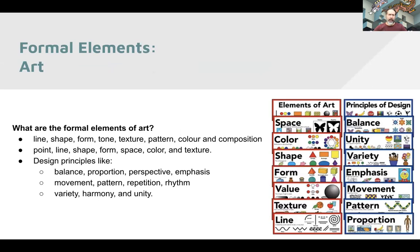Formal elements in art are pretty well defined — art scholars and artists have thought a lot about this. Those things are line, shape, form, tone, texture, pattern, color, and composition. Another set might be point, line, shape, form, space, color, and texture. It's a pretty well-defined set — we know what a shape is, we know what a line is. We can look at a piece of art and say it's made up of lines and shapes with different colors and textures put together into different patterns to create different compositions.